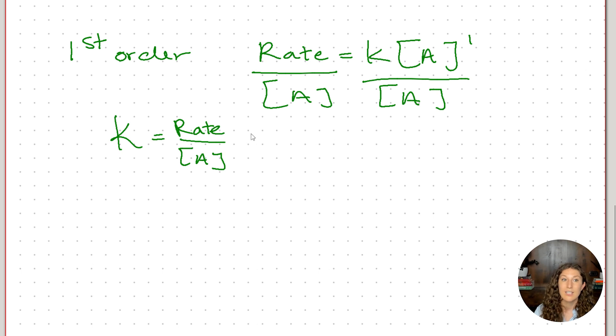Now in terms of the units, remember rate is in molarity per second and A is in molarity. So guess what? The molarities cancel and our k for a first order reaction is 1 over seconds or seconds to the negative 1. So it's not magic, it's truly just canceling out units.